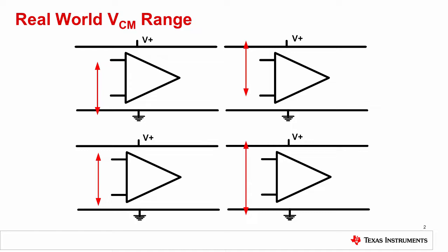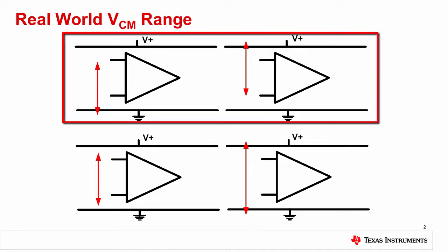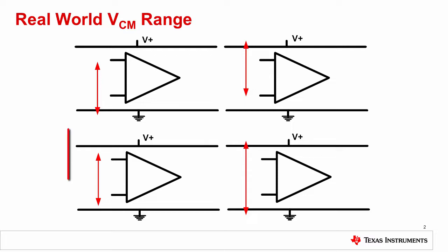As shown in the figure, some amplifiers have a common mode range which is slightly beyond the negative supply or positive supply. Other amplifiers have a common mode range which is a few volts away from either supply.